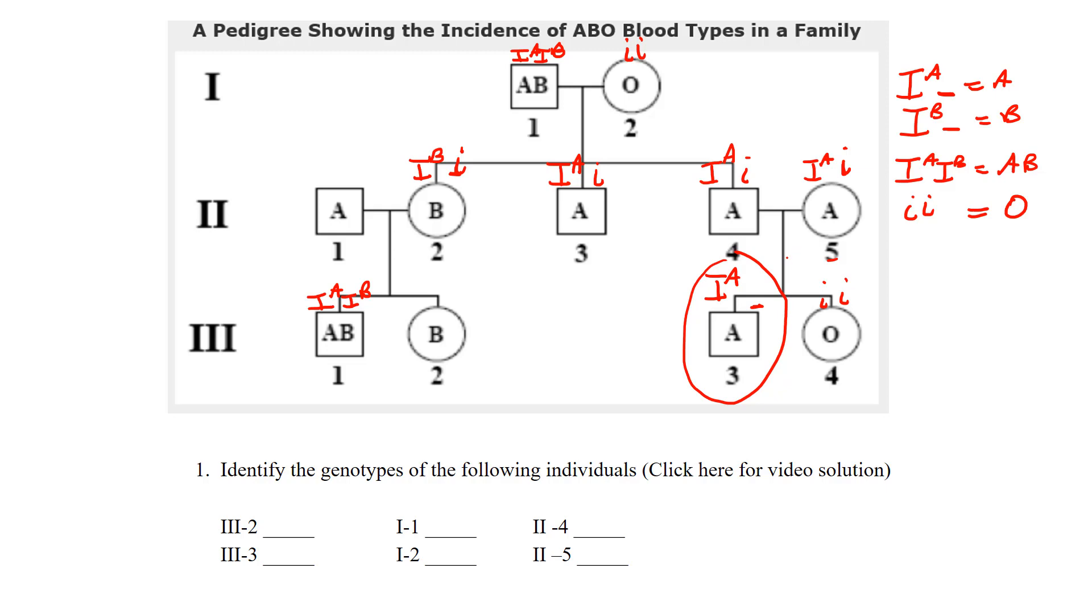Let's take a look at this individual. Now gets a little tricky here. We know individual two-one must have an I^A, and you might be thinking the same thing. They married in the family - how do we know if they're I^A I^A or if they're heterozygous I^A with a little i?